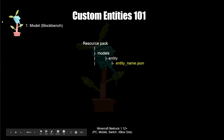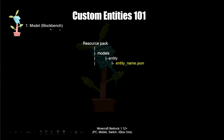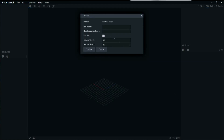First you're going to need to create the model itself, which we'll do in Blockbench. It sits under resource pack > models > entity > entity name — we'll deal with that a bit later. Here in Blockbench, the first thing we're going to do is give the file a name. We're going to call this 'flesh eating plant'.